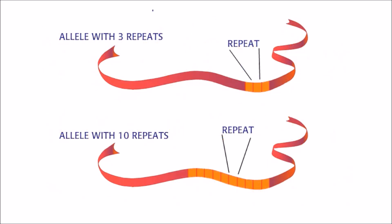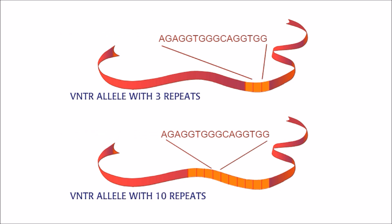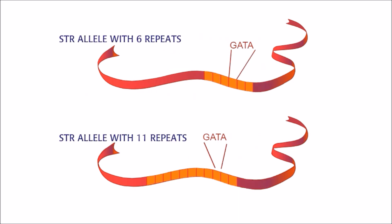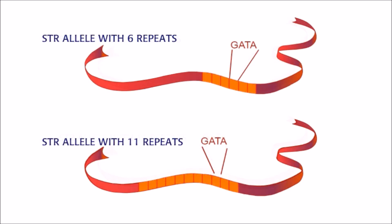Different numbers of repeats create different alleles. Repeated sequences of 9 to 80 nucleotides are called Variable Number Tandem Repeats. This VNTR has 16 nucleotide repeat. Repeated sequences of 2 to 8 nucleotides are called Short Tandem Repeats. This STR has 4 nucleotide repeat.